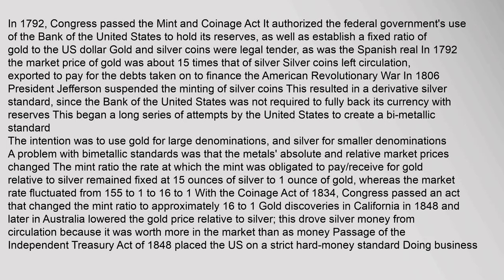In 1792, Congress passed the Mint and Coinage Act, authorizing the federal government's use of the Bank of the United States to hold its reserves and establishing a fixed ratio of gold to the U.S. dollar. Gold and silver coins were legal tender, as was the Spanish real. In 1792, the market price of gold was about 15 times that of silver. Silver coins left circulation, exported to pay for debts from the American Revolutionary War. In 1806, President Jefferson suspended the minting of silver coins. A problem with bimetallic standards was that the metals' absolute and relative market prices changed the mint ratio; the rate remained fixed at 15 ounces of silver to 1 ounce of gold, whereas the market rate fluctuated from 15.5 to 1 to 16 to 1.